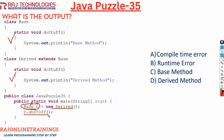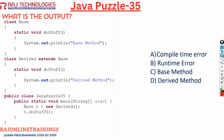So when you say b.doStuff(), it is going to invoke the Base class doStuff method, because this method is not considered an overridden method. Since static is related to the class, and b is declared as type Base, it will go to the doStuff method of the Base class. The output of this program is 'base method', so the correct option for this puzzle is option C, that is 'base method'.